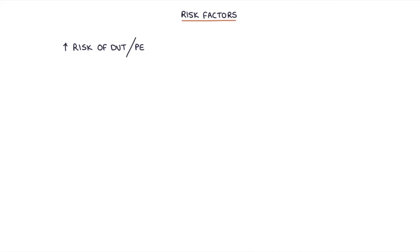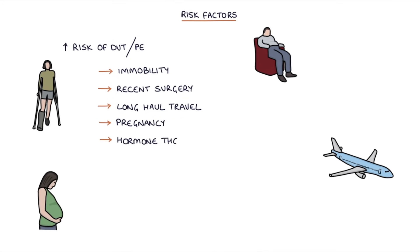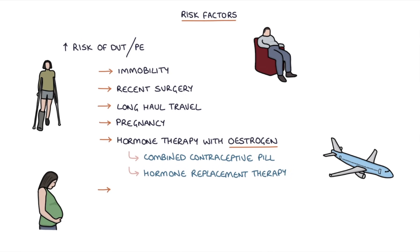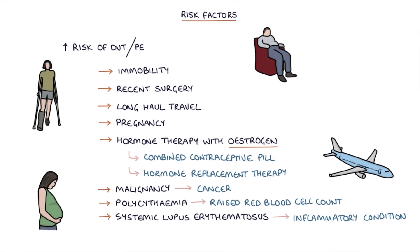These risk factors include immobility, recent surgery, long-haul travel, pregnancy, hormone therapy with estrogen — for example the combined oral contraceptive pill or hormone replacement therapy — malignancy or cancer, polycythemia which is a raised red blood cell count, systemic lupus erythematosus which is an inflammatory condition, and thrombophilia, which is where the patient is prone to developing blood clots.